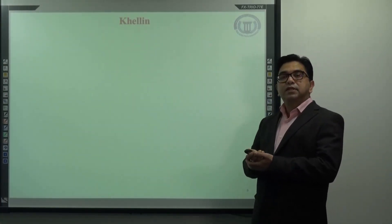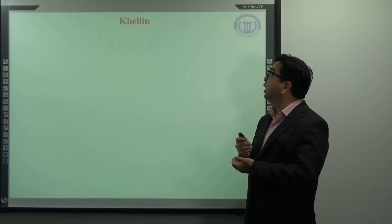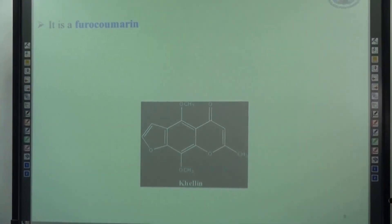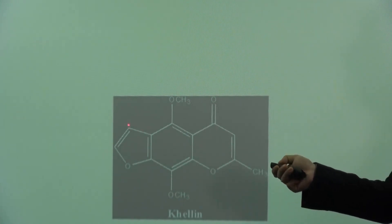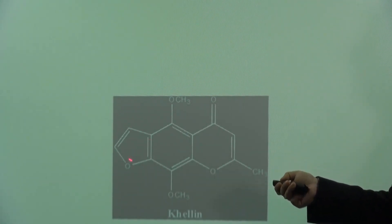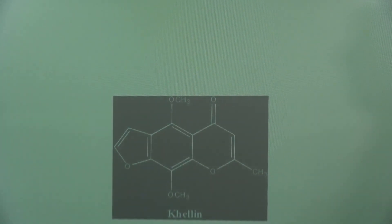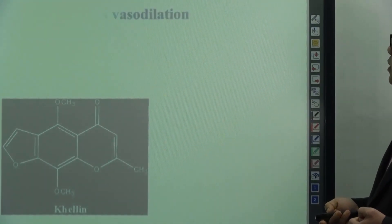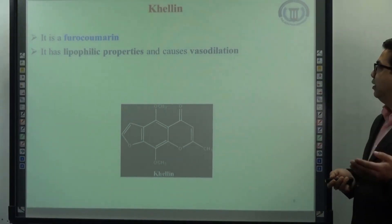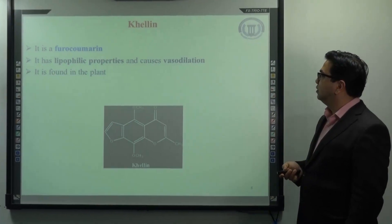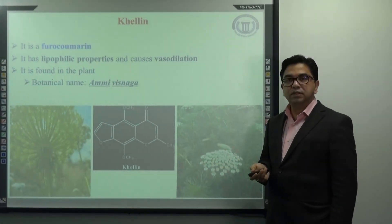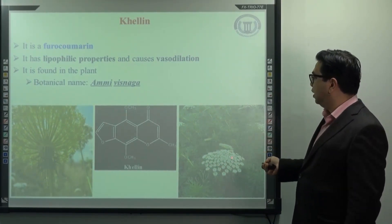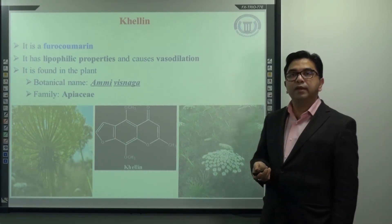We go to the next example of coumarin, known as khellin. Khellin is again an example of furanocoumarin. If you look at the structure, the coumarin ring is attached to a furan ring, that is why it is known as furanocoumarin. Another interesting feature is that the keto group is present at the fourth position. It has lipophilic property and can cause vasodilation. It is found in the plant Ammi visnaga, which belongs to the family Apiaceae.